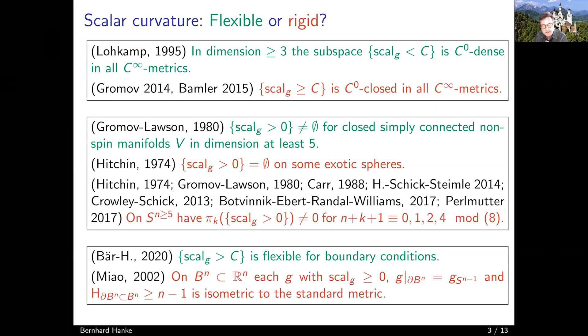I would like to start with a flexibility result by Lohkamp from 1995, namely that if you look at the space of all Riemannian metrics with a certain upper scalar curvature bound C, then this subspace is actually C^0 dense in all C^∞ metrics. So every Riemannian metric can be C^0 approximated by a metric with some given upper scalar curvature bound. This is why it is more interesting to look for restrictions for metrics with lower scalar curvature bounds.